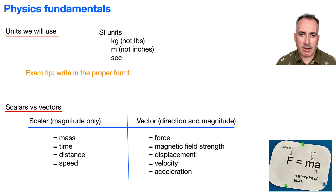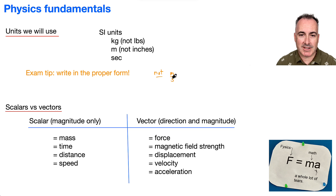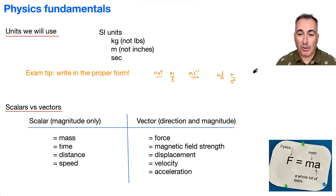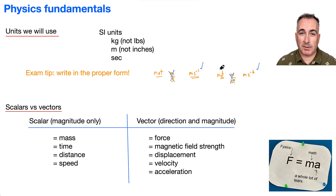I wanted to point out something important for proper form. If we're writing meters per second for a speed or velocity, we're going to write it as meters seconds to the minus one. And instead of meters per second squared, we say meters seconds to the minus two, because that's what those exponents mean. So we're going to use that notation throughout.